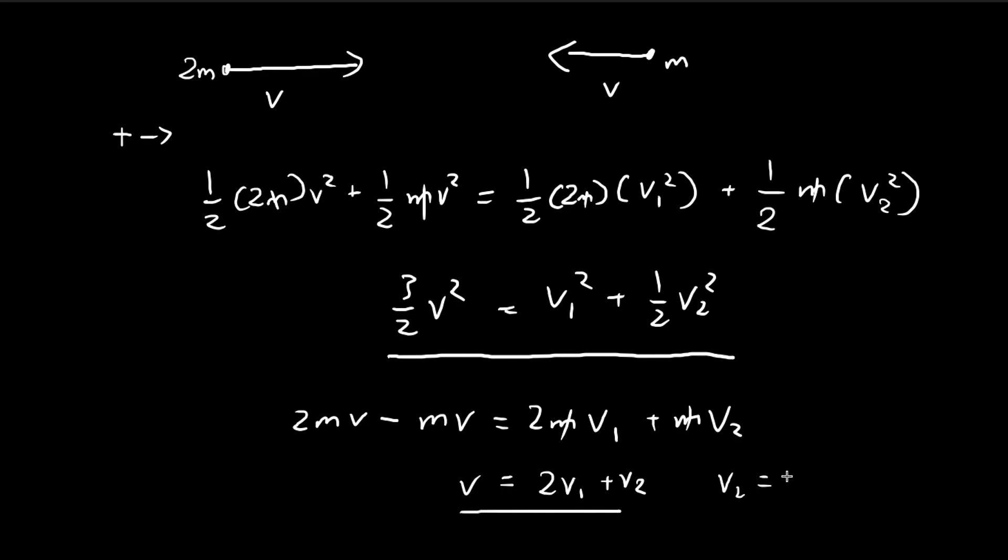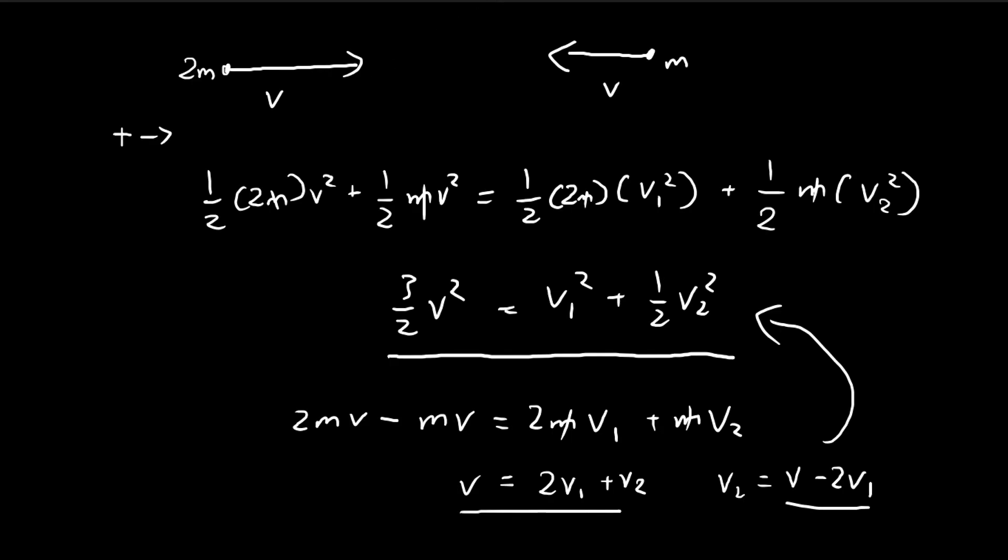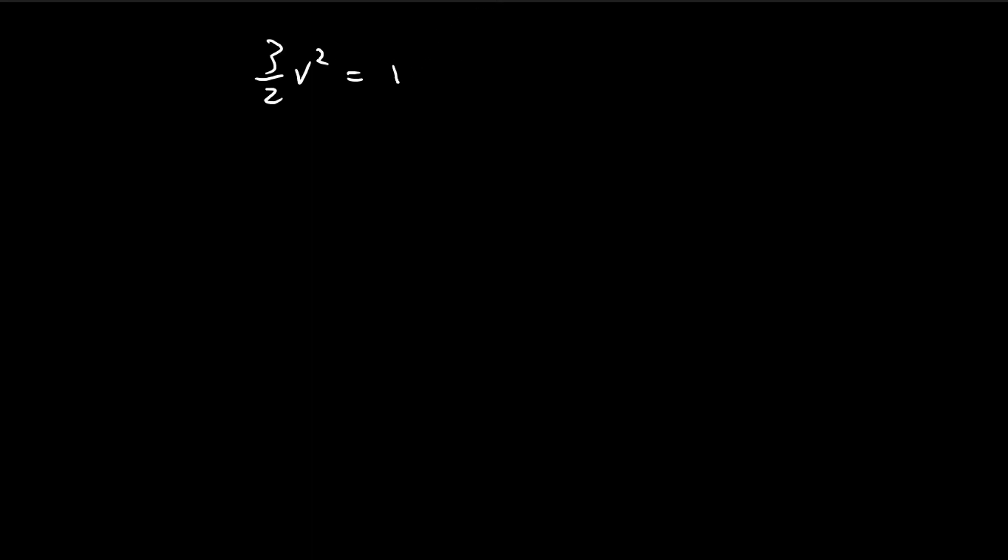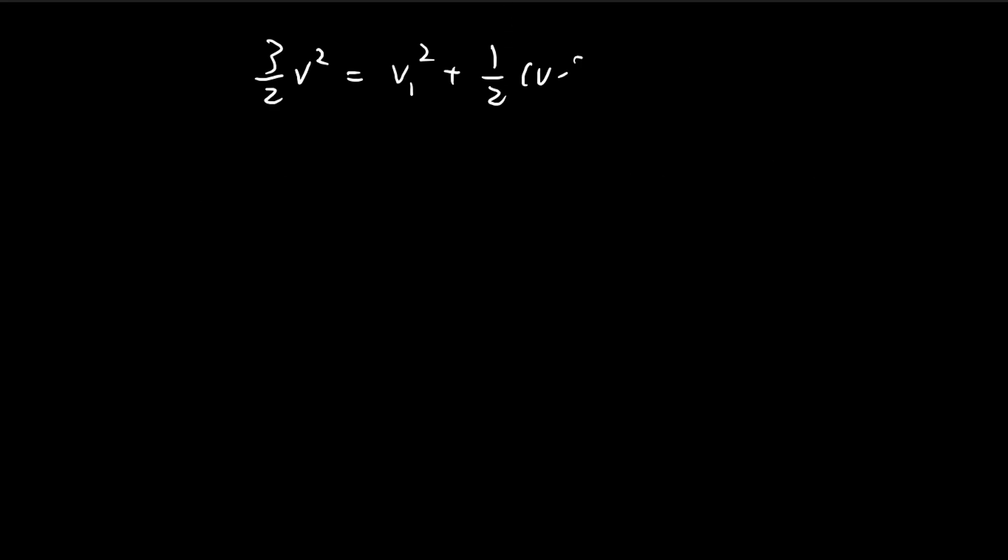So I'm going to substitute v2 equal to v minus 2v1 into this equation. So let's do just that. So eventually we're going to get a quadratic equation. So v2 is equal to v minus 2v1 squared. And then at this point, it's really just mathematics and simplification.